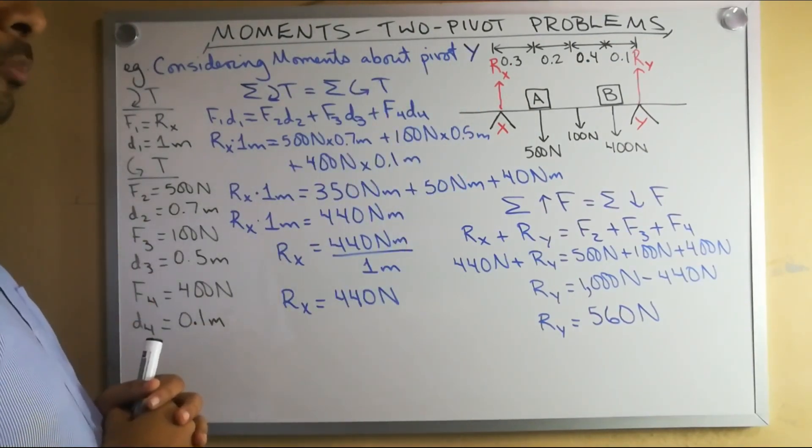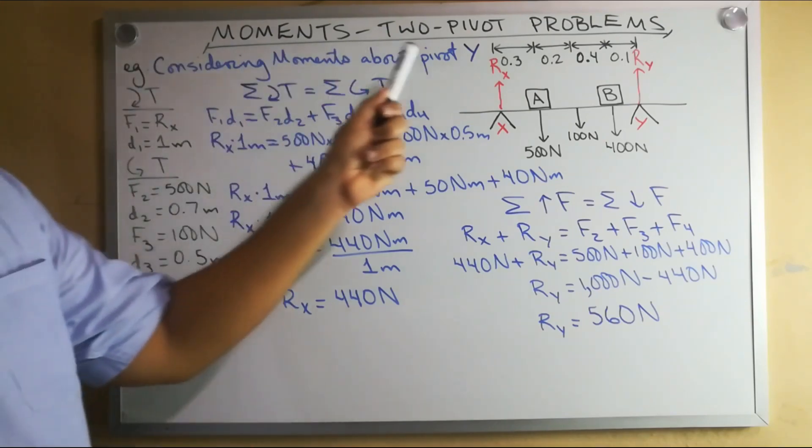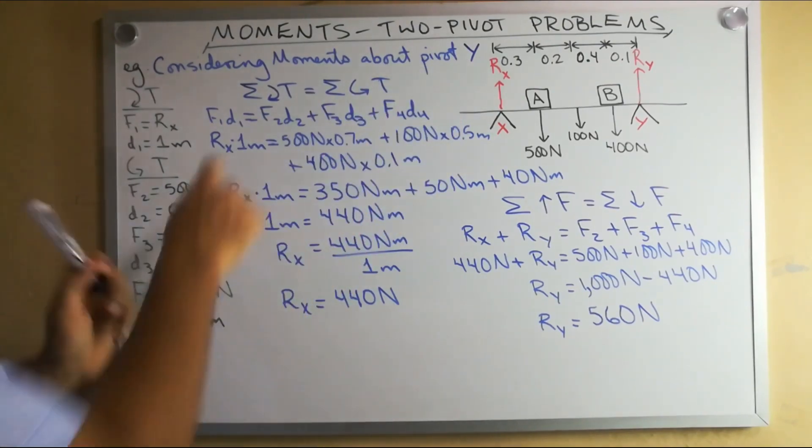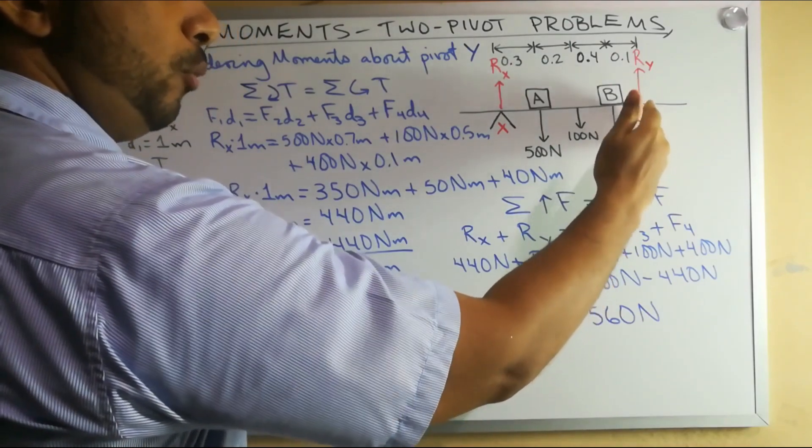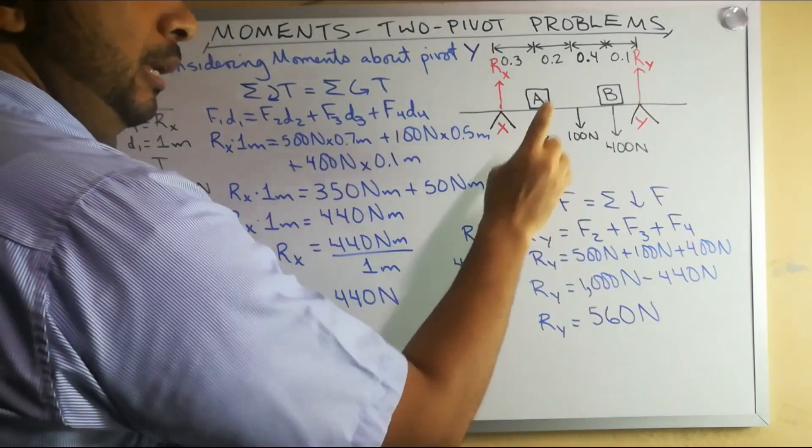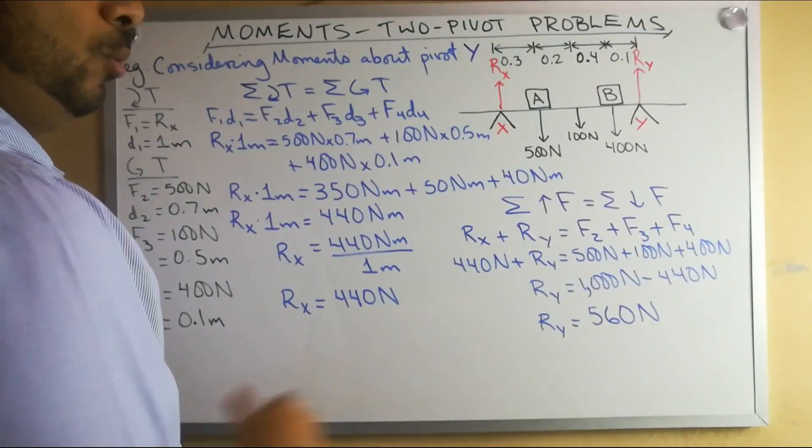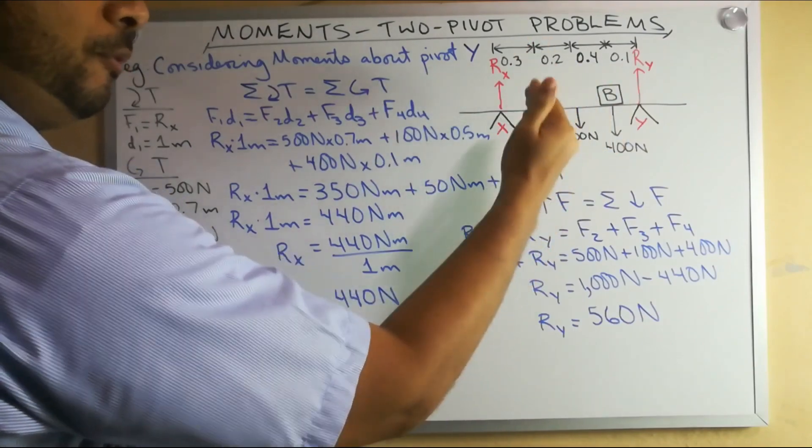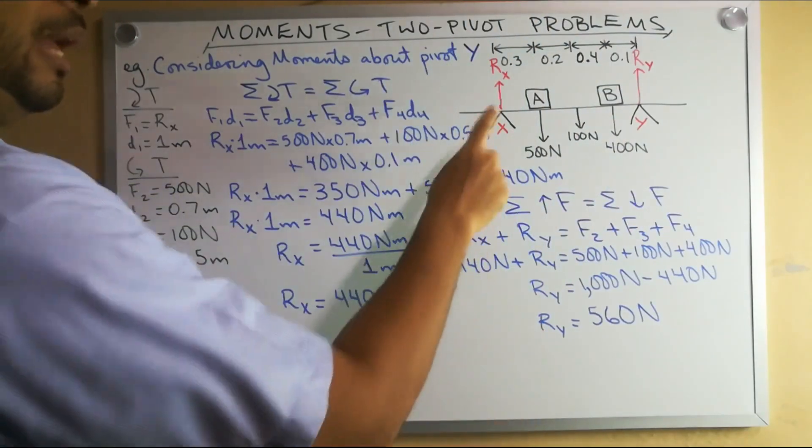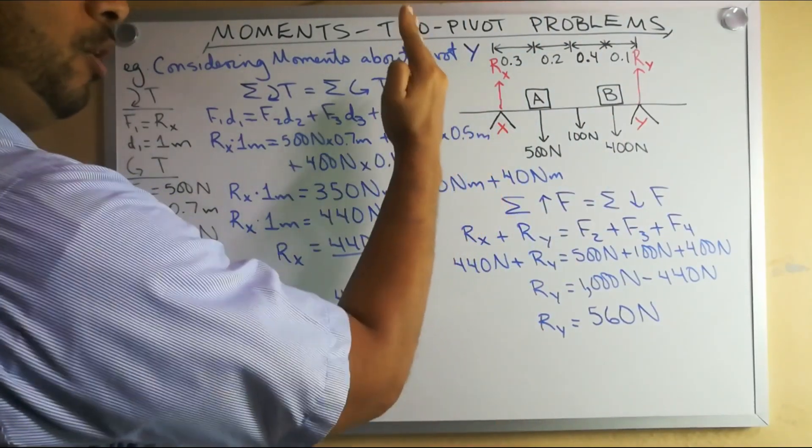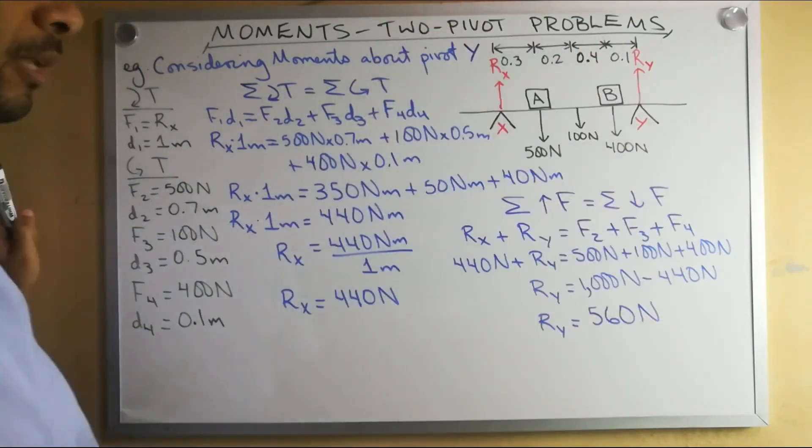So next step will be to identify our givens. If I'm considering moments about pivot Y, I have to first find the clockwise moments. If this is my pivot point, the turning point, will A, B or the weight of the plank cause it to rotate clockwise? No. Since those are to the left of point Y and acting downwards, those would be anti-clockwise. X is pushing upwards and it is to the left of pivot Y, so that will cause a clockwise rotation.